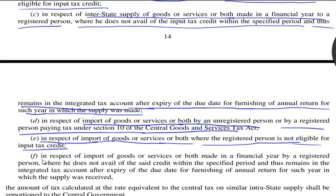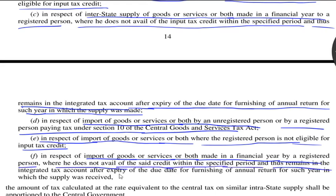Again, out of integrated tax paid to the central government in respect of import of goods, services or both, made in a financial year by a registered person, where he does not avail the said credit within the prescribed limit, and thus remains in the integrated tax account after the expiry of the due date for furnishing the annual return for such year in which the supply was received.